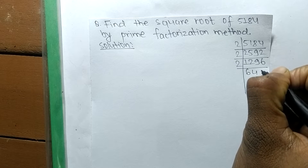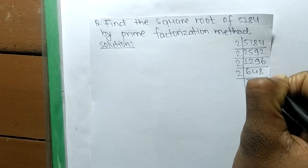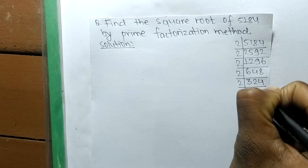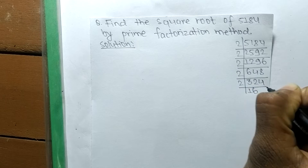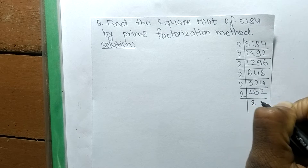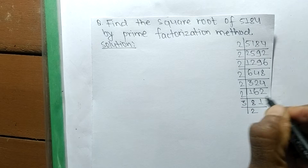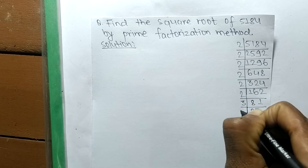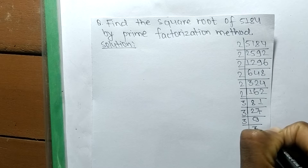Remaining 1, giving 16. Then 2 times 8 is 16. Then 2 times 3 is 6, 2 times 2 is 4, and 2 times 4 is 8. Then 2 times 1 is 2, remaining 1, giving 12. Then 2 times 6 is 12, and 2 times 2 is 4. Then 2 times 8 is 16, and 2 times 1 is 2. Then 3 times 2 is 6, remaining 2, giving 21. Then 3 times 7 is 21. Then 3 times 9 is 27, and 3 times 3 is 9. So we have found the prime factors.